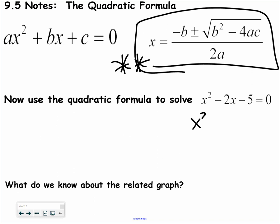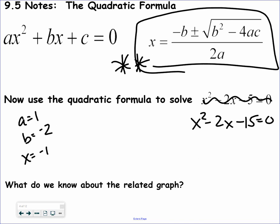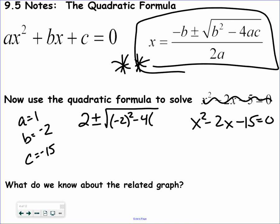I'm going to change this question back — remember, don't tell your teacher. So a equals 1, b equals negative 2, and c equals negative 15. Now I'm going to use the formula instead: negative b, or the opposite of b, plus or minus the square root of b squared minus 4ac, all over 2a.